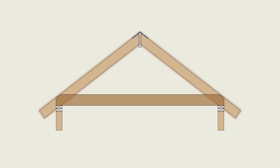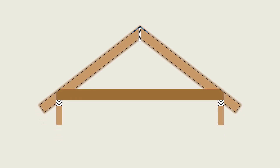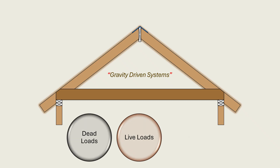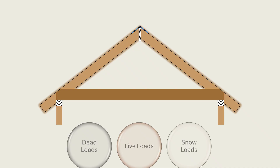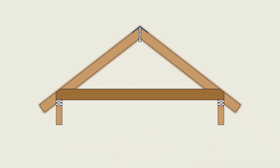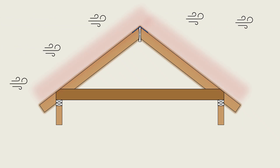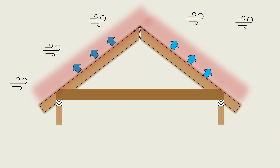In residential construction, roofs are often thought of as gravity-driven systems designed to carry dead, live, and snow loads. However, in many high wind events, the most critical force acting on a roof is not downward, but upward. As wind flows over a roof surface, it creates regions of net negative pressure that can lift rafters away from the supporting walls, turning a conventional gravity-bearing system into an uplift-connection-controlled design challenge.